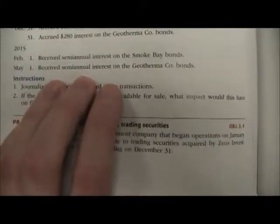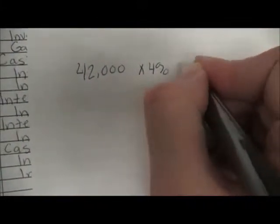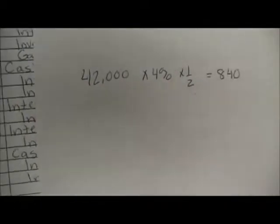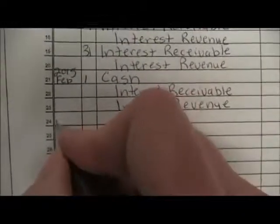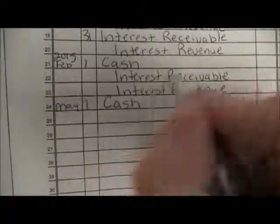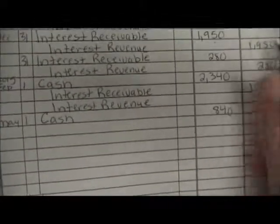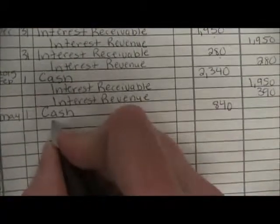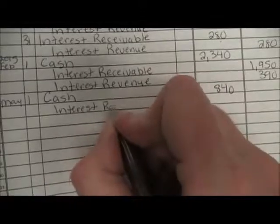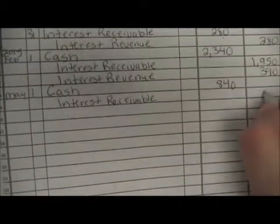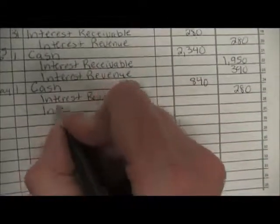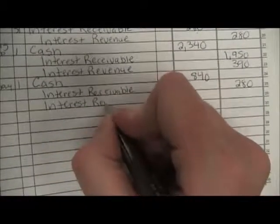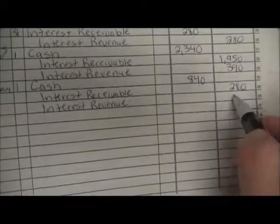Our last journal entry: we received semi-annual interest on the Geothermal Company bonds. We calculate $42,000 times 4% times one-half and get $840. Our date is May 1st. We debit cash for $840. In December we had $280 of accrued interest, so interest receivable is our first credit of $280. Then interest revenue for the difference: $840 minus $280 gives us $560.